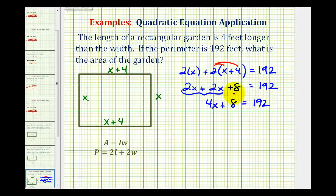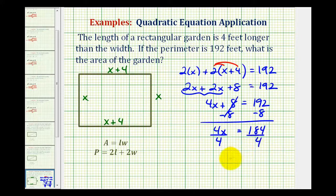Now we have a basic two-step equation. So we'll start by undoing this plus eight. We'll subtract eight on both sides. So we'll have four x equals 192 minus eight, which equals 184. Divide both sides by four. We have x equals 46, or in this case 46 feet.